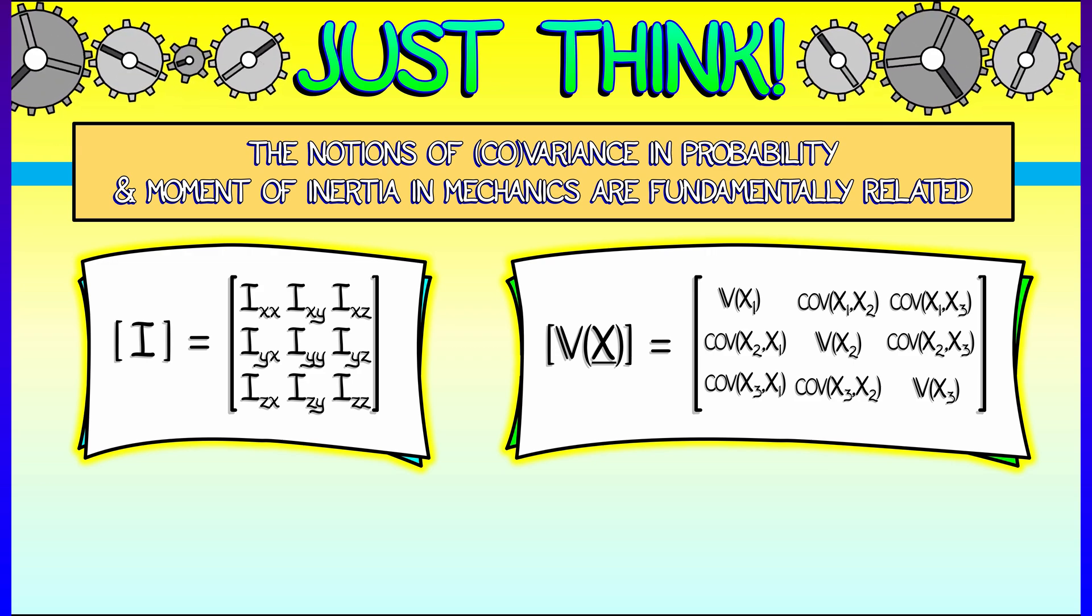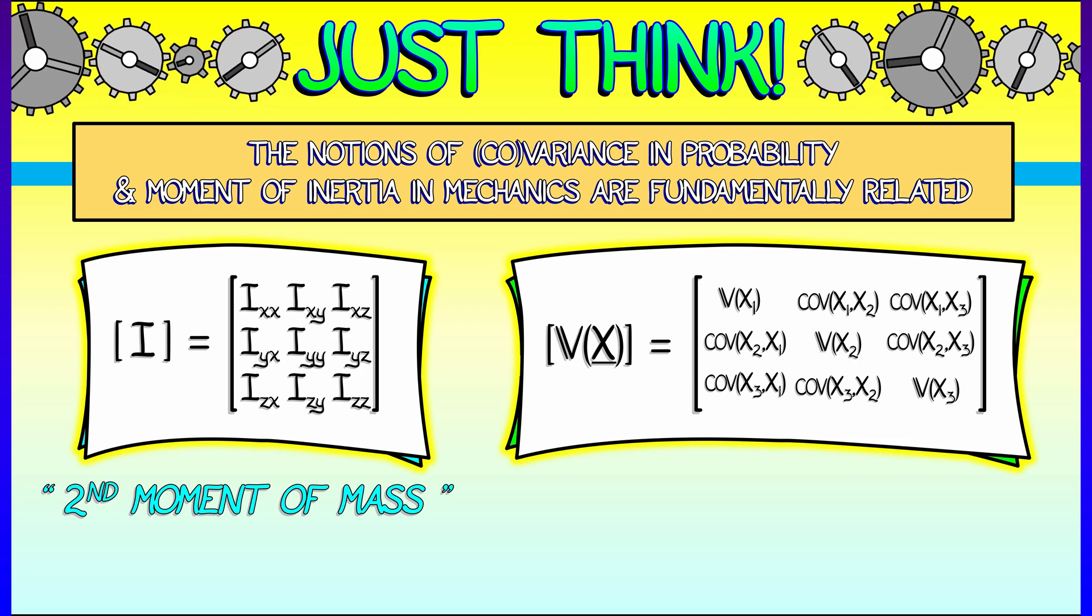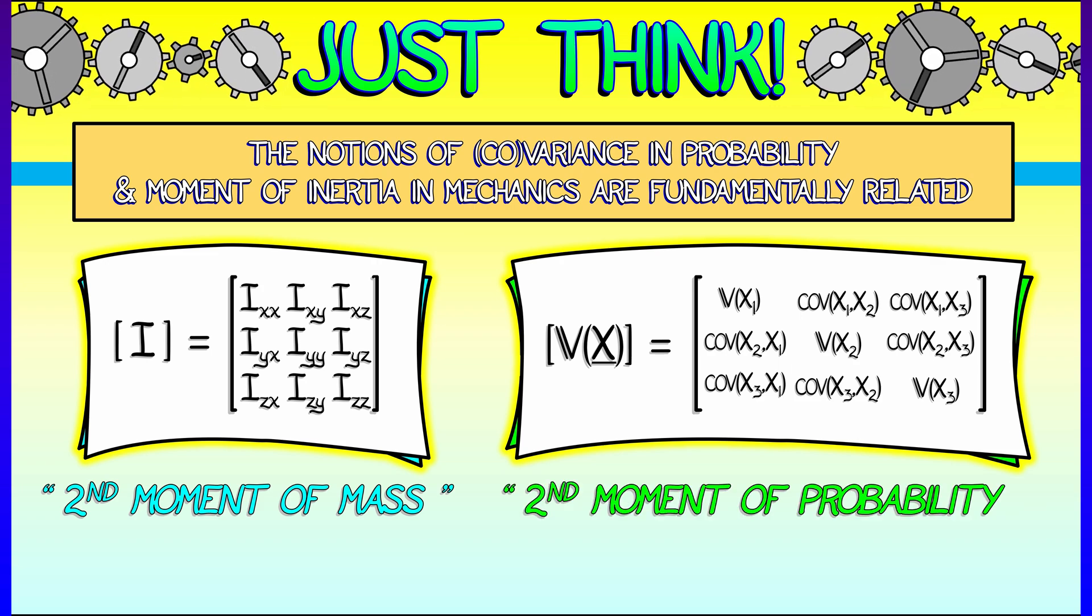There are even some similarities in notation and terminology, where sometimes the inertia matrix is called the second moment of mass, and the covariance matrix is called the second moment of probability.